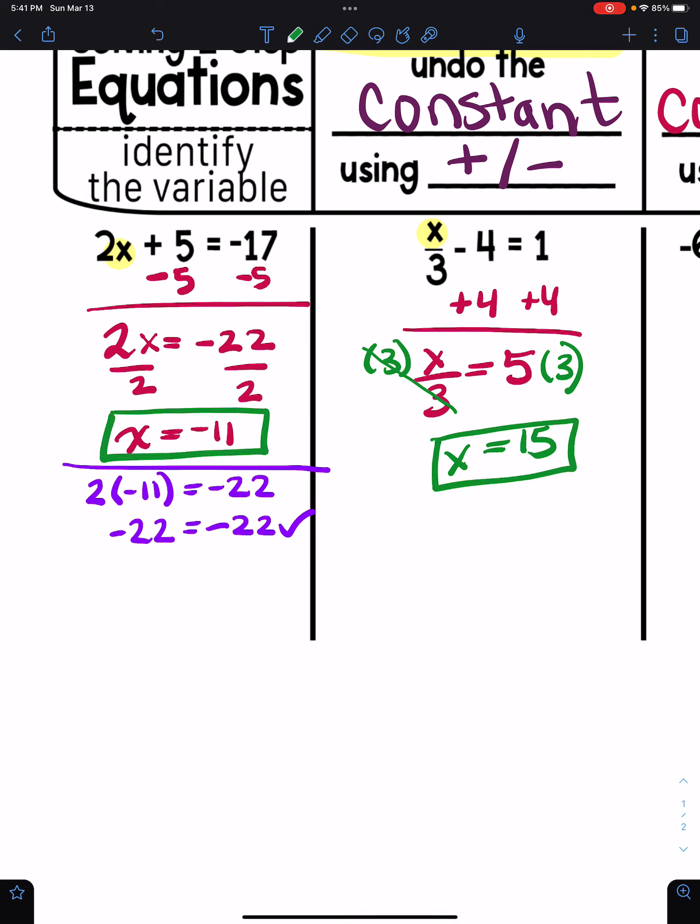And I can check it, easily check it to see if my answer is correct, by taking that 15 and putting it back in for x in the original problem. I'm going to get 15 divided by three is five. And guess what? Five minus four is one. So I got it right.